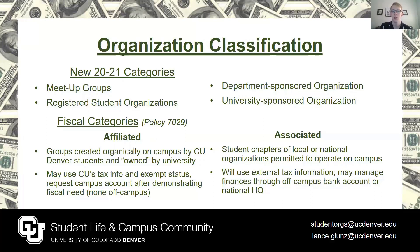Affiliated groups are created on campus by CU Denver students and recognized under the university umbrella upon registration. They may use CU's tax info and finance system and must manage funds through CU if they are fiscally active. The CU Biology Club is a great affiliated example. In contrast, associated groups are student chapters of local or national organizations which would manage their funds externally. As of fall 2019, clubs of both fiscal categories are eligible to submit student government funding proposals. Please contact Student Life if you have questions about your club status.